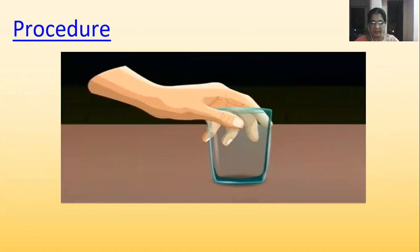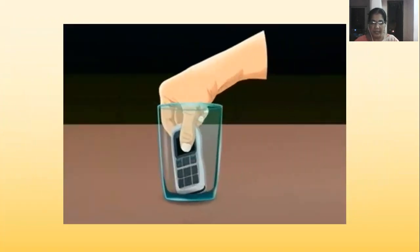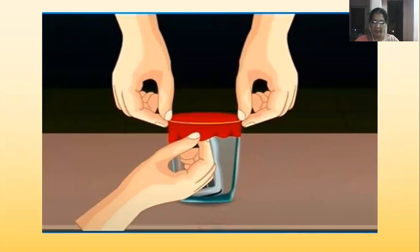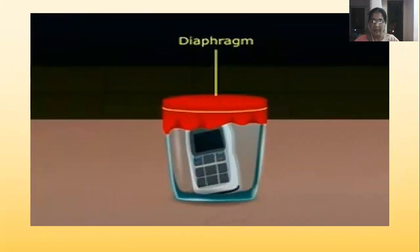Procedure: Take a glass beaker and place it on a table. Now take a cell phone and put it in the glass beaker. Take a balloon and cut it. Stretch the balloon around the open end of the beaker. If needed, tie the balloon with a thread or a rubber band. Now the stretched rubber balloon acts like a diaphragm.